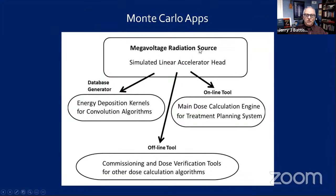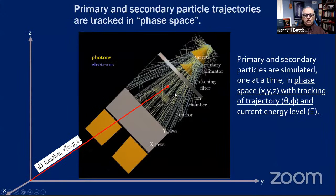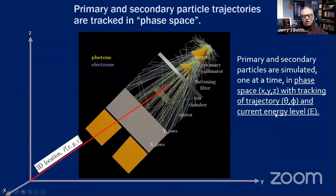Monte Carlo applications have been focused on linear accelerator head modeling, energy deposition kernels, and can be used as a main engine for treatment planning or as an offline commissioning tool. You can determine a phase space at any location — binning information according to position, trajectory, and current energy level — and this is used both in Monte Carlo methods and in the Boltzmann method.